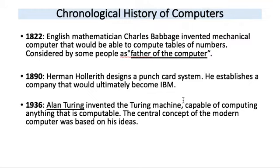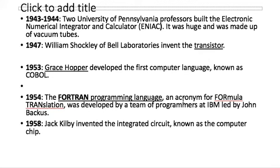In 1936, Alan Turing invented the Turing machine, capable of computing anything that is computable — that was an idea of a modern computer. In 1943-44, two students of the University of Pennsylvania professors built ENIAC — Electronic Numerical Integrator and Calculator. Its full form is important. It was huge, the size of a living room.